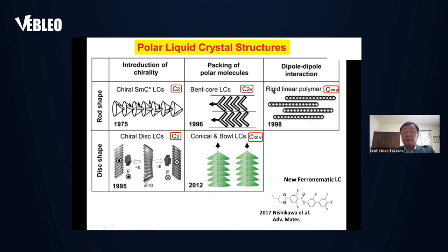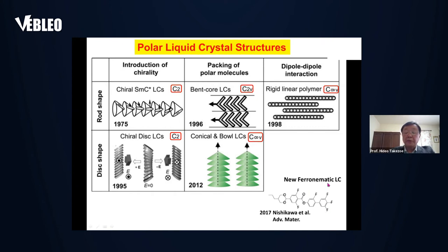Both are realized. Rigid linear polymers can also show polar order, possibly because of dipole-dipole interaction. More recently, a new ferroelectric liquid crystal was discovered in certain small molecules showing ferroelectric switching. Another group also shows similar behavior, but the polar structure is still under intense debate, so I will skip that story today.